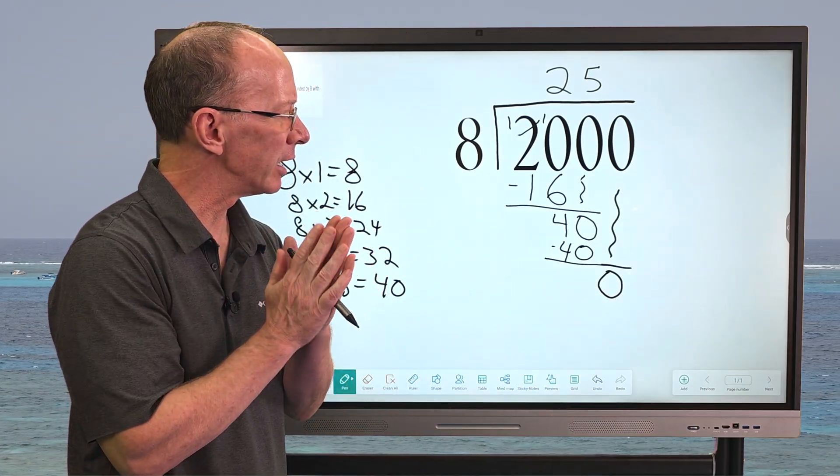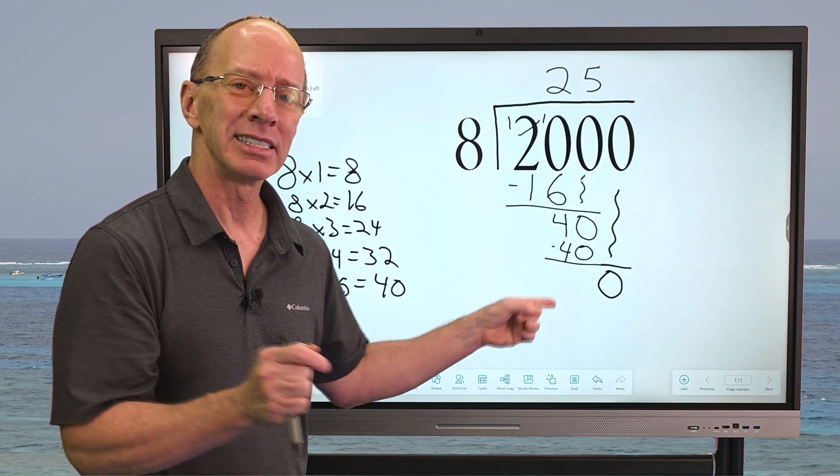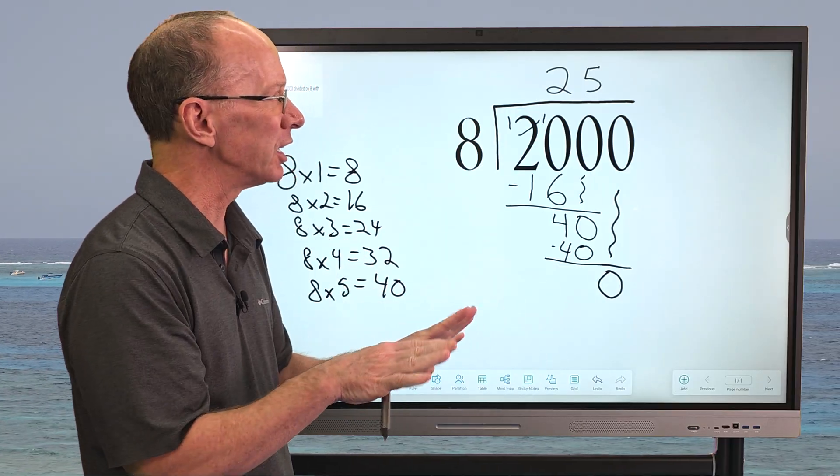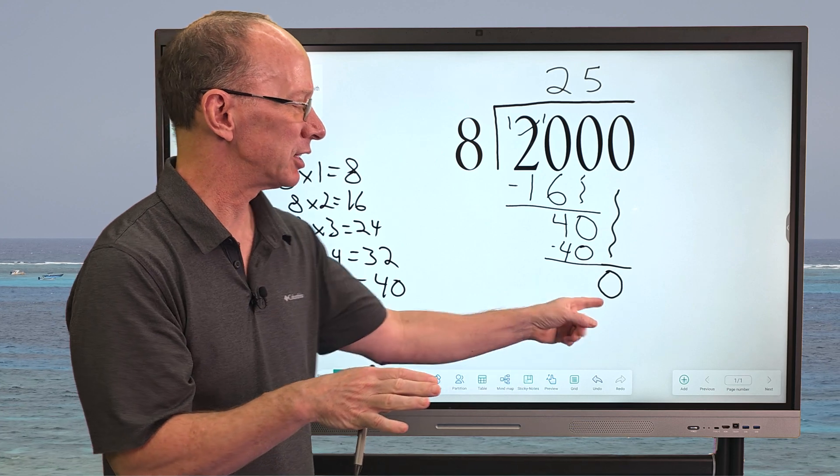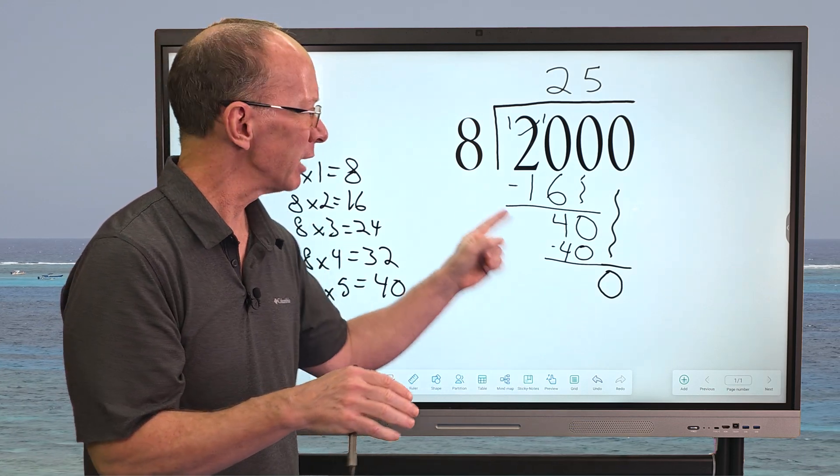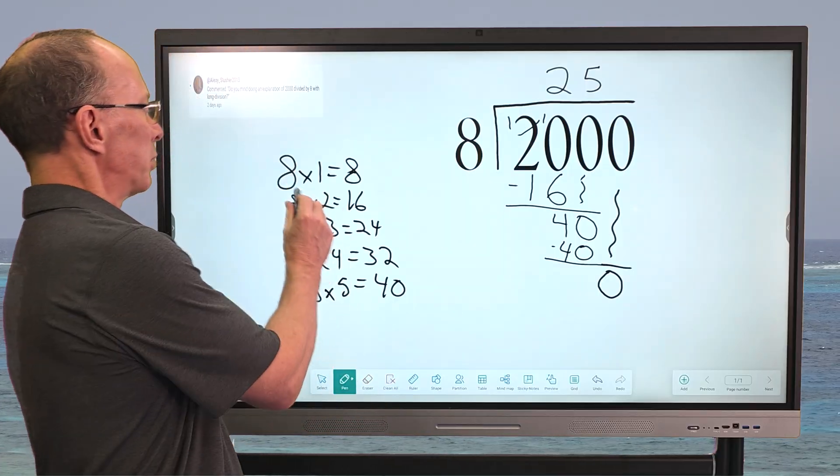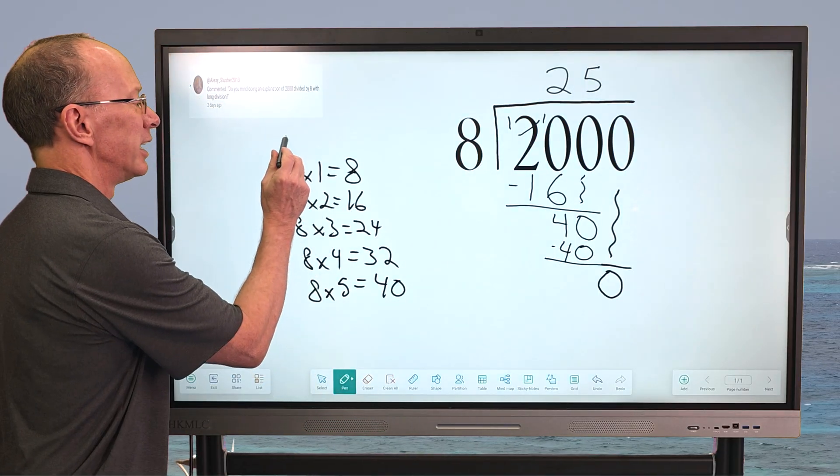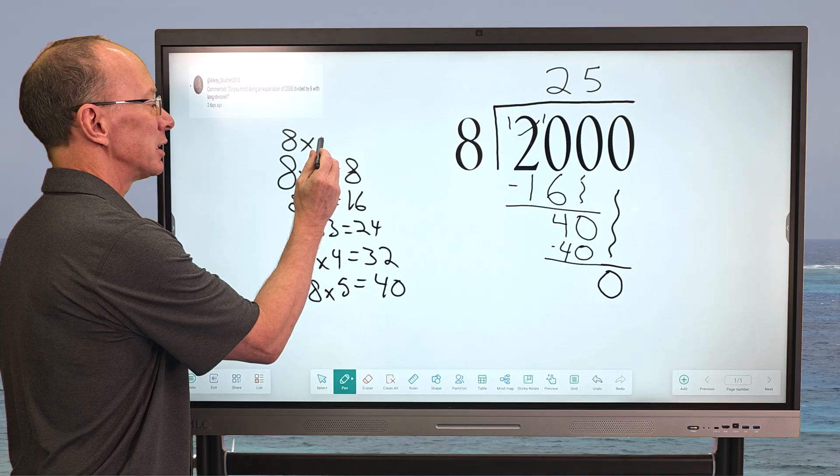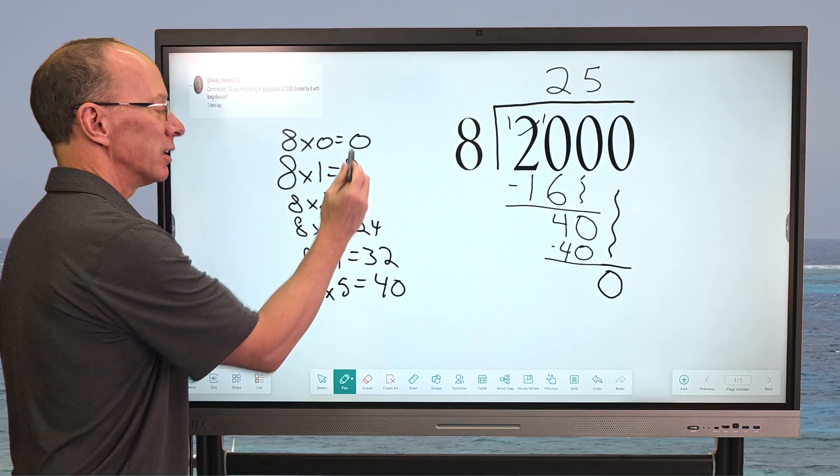Hmm. How could we do that? We have a zero there. That is not a remainder. We're not finished with this problem, because we still have this number here. How many times can I put 8 into zero? I forgot to put another multiplication problem right here. 8 times 0 equals 0.